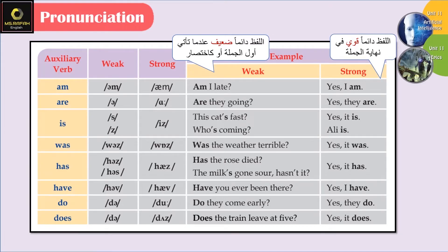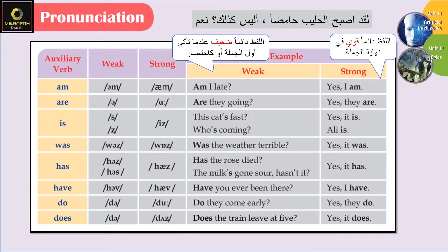'Has' — weak form: 'həz' or 'həs', depending on what comes before it. If a voiceless consonant precedes it, we use /s/; if a voiced sound precedes it, we use /z/. For example: 'Has the rose died?' 'The milk's gone sour, hasn't it?' 'Yes, it has' — it becomes strong in the answer.